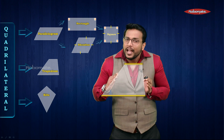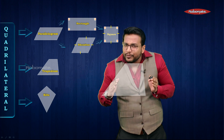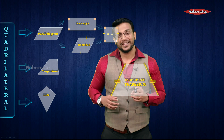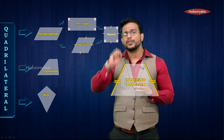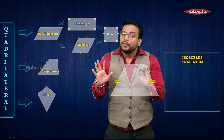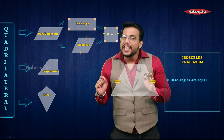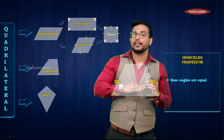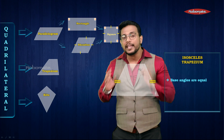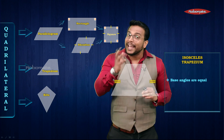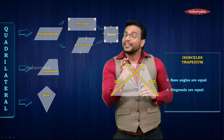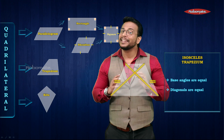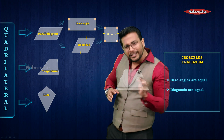I'm modifying the trapezium so that the non-parallel sides are equal, and this becomes an isosceles trapezium. An isosceles trapezium has two properties. First, base angles are equal — these are the angles made with the bigger parallel side. Second, diagonals are equal. So in an isosceles trapezium: base angles are equal and diagonals are equal.